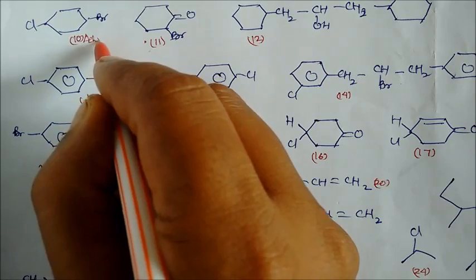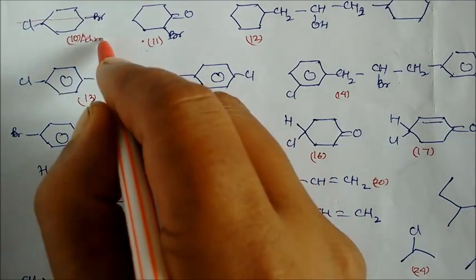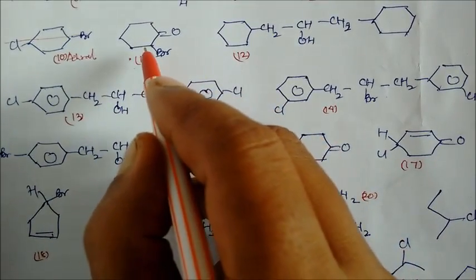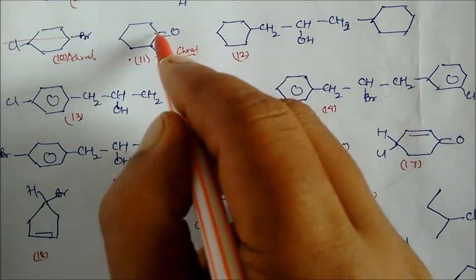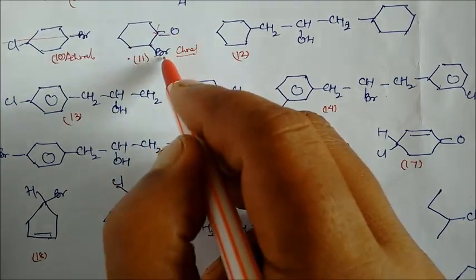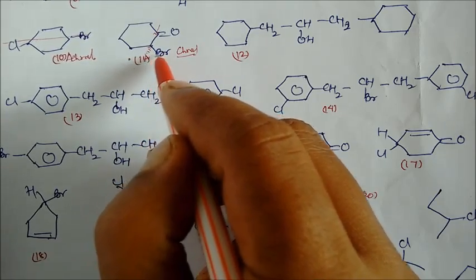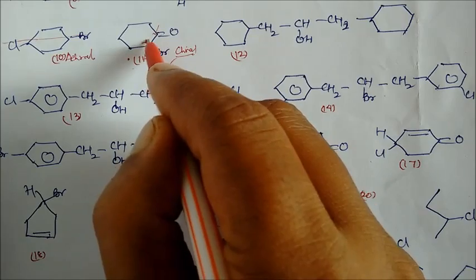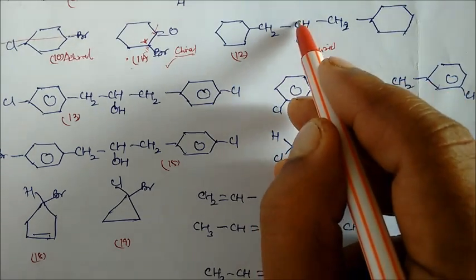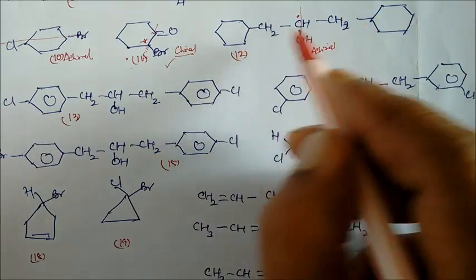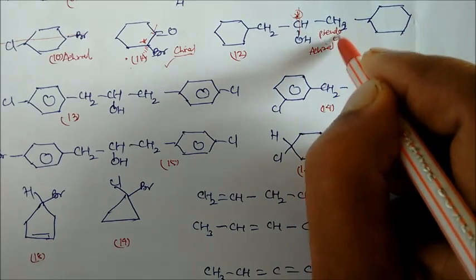This is also achiral because the groups are opposed to each other; drawing a straight line shows symmetry — also optically inactive or achiral. This next one is chiral because you can see the groups consist of Br, hydrogen, oxygen — four different groups are present, so this is the chiral carbon. This other one is achiral — the groups are symmetrical. This is your pseudo-chiral compound.